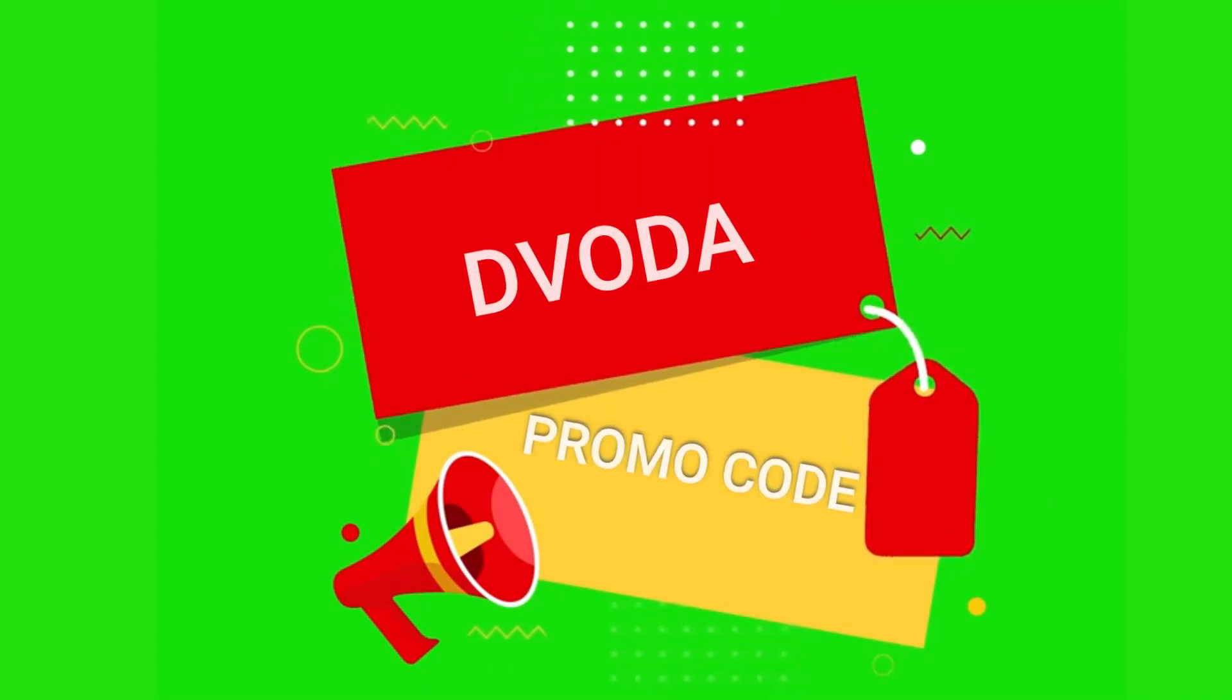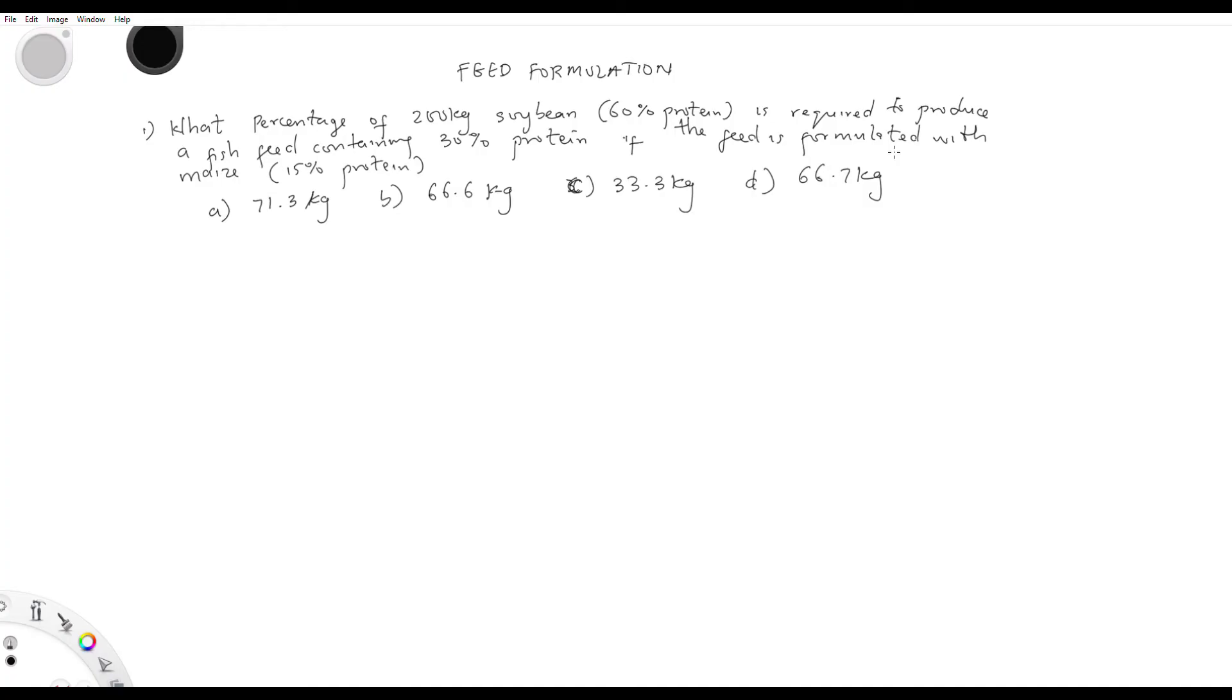Welcome back. Now how would you get this in exam? This is a typical question for CBT exams: What percentage of 200 kg soybeans containing 60% protein is required to produce a fish feed that contains 30% protein if the feed is formulated with maize and maize contains 15% protein? Remember, I said these values are just assumed, they're not the real thing. What percentage of 200 kg soybeans will be required?